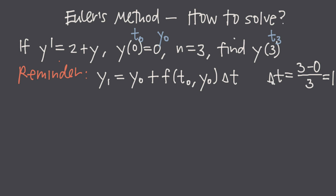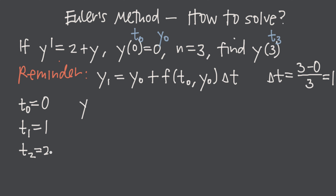Once you have delta t, set up a chart with columns for t and y. Start with t₀ = 0, then add delta t repeatedly: t₁ = 1, t₂ = 2, t₃ = 3. Since we're looking for y(3) where t = 3, we stop there.